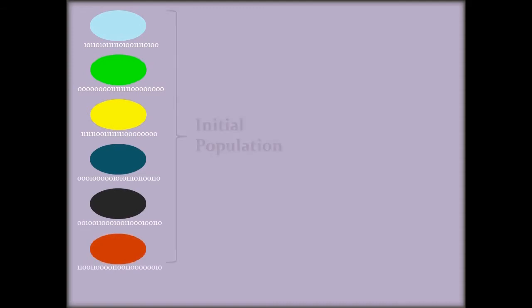To begin with, we'll have to generate a population of random chromosomes. This is our initial population. Each one of these chromosomes represent a different solution. The next steps will be repeated until the required solution is found, for us is the purple color.